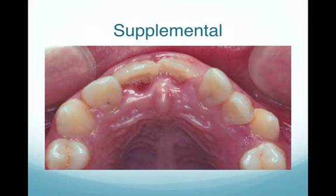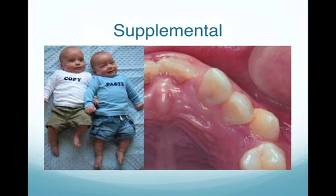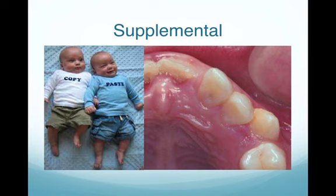The third type is the supplemental supernumerary — essentially a copy of an existing tooth, like twins. It is a tooth exactly similar to an adjacent tooth. The management is usually extraction of one tooth if there is not enough space for both, as they commonly cause crowding. They rarely cause impaction because they look like a normal tooth and typically erupt into the oral cavity.